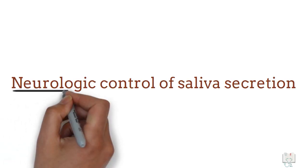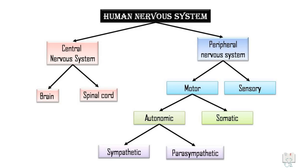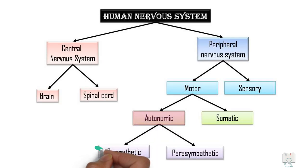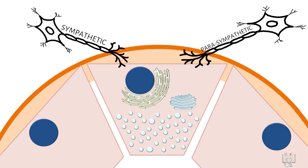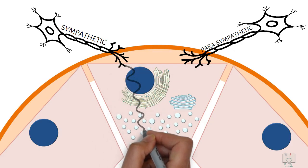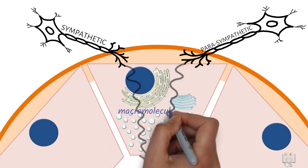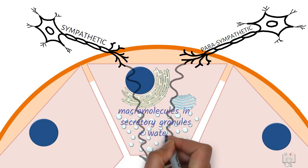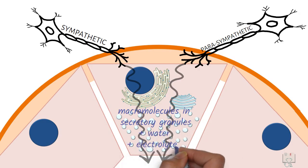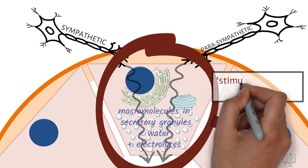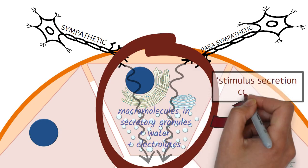Saliva secretion is mediated through the activity of the autonomic nervous system, by both its sympathetic and parasympathetic innervations. The neurotransmitters in the nerve endings stimulate the acinar cells to release their secretory granules containing the macromolecules, and to secrete water and electrolytes. The molecular events that occur during this process are called stimulus-secretion coupling.